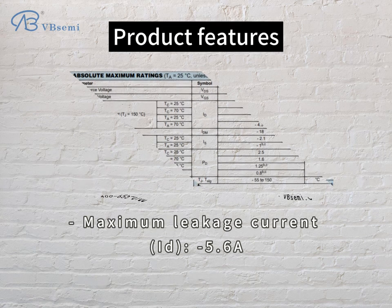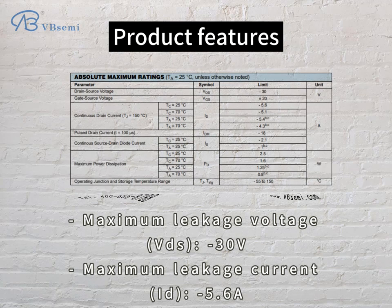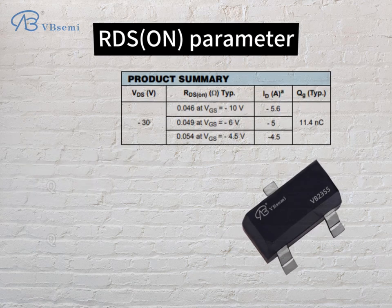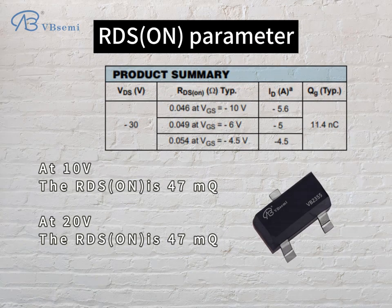Product features: Maximum drain-source voltage VDS -30V, maximum drain current ID -5.6A, gate-source voltage VGS -20V, threshold voltage VTH -1V. RDS(on) parameter: at 10V the RDS(on) is 47mΩ, and at 20V the RDS(on) is 47mΩ.